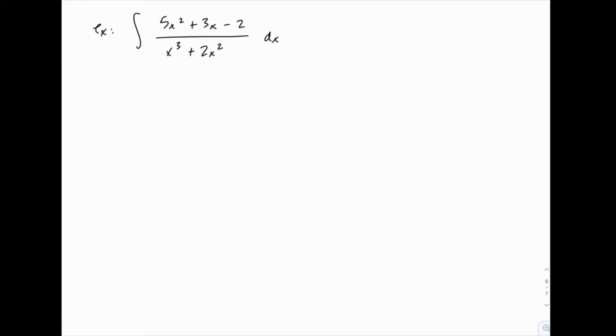We're going to start with this rational function, 5x² + 3x - 2 over x³ + 2x², and we'll carry out the partial fraction decomposition to write this as a series of simpler rational functions.